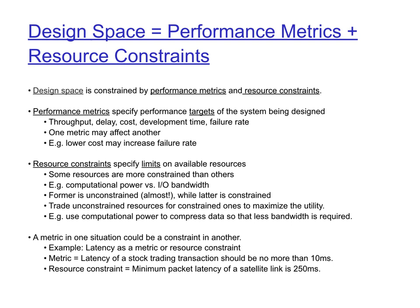Another example: a project should be completed within three months, or a system should not fail more than once every ten years. Meeting one performance metric might affect another — for example, if you lower the cost of a system, you might end up increasing its failure rate. Latency can be a performance metric in one situation and a resource constraint in another. In the stock trading example, a 10 millisecond per transaction requirement is a performance metric.